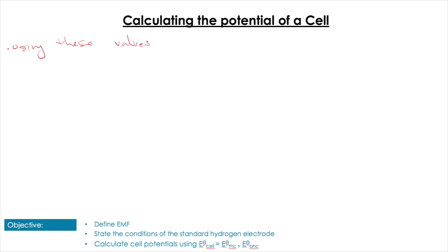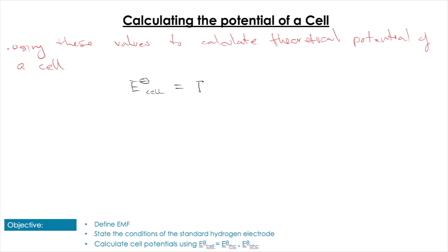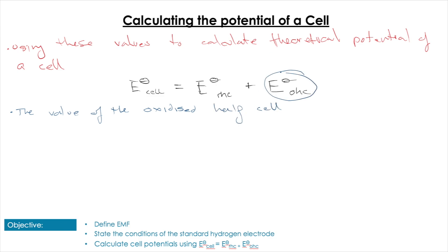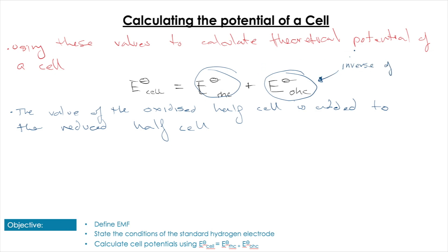We use a simple equation to calculate the overall E°cell - the standard cell potential. E°cell equals the E° of the reduced half-cell plus the E° of the oxidized half-cell. Remember, all values in Table 24 are given as reduction potentials, so we have to invert the sign for our oxidation half-cell. All we have to do is flip the sign to get the right value, giving us the theoretical potential difference of the cell at standard conditions.